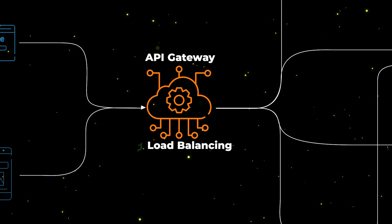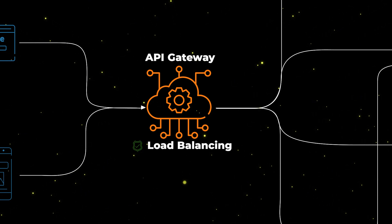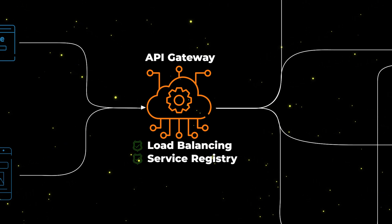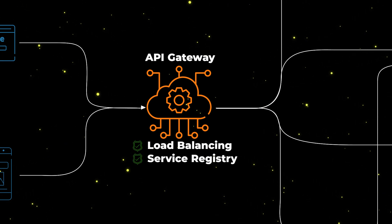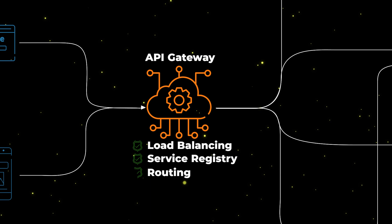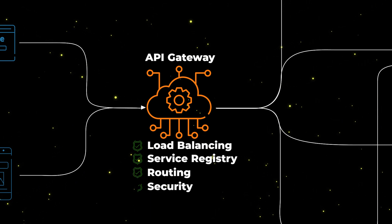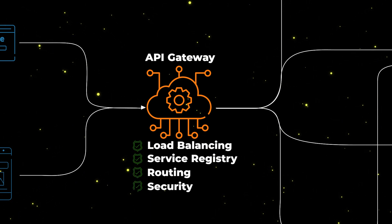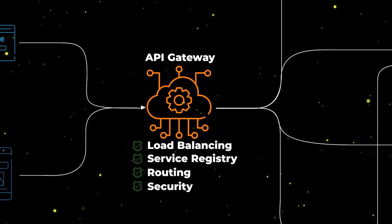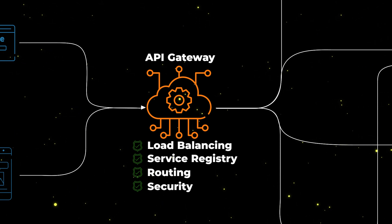The gateway does load balancing on the incoming traffic, it acts like a service registry — meaning that it's aware of all the services defined in the system — and knows how to route the request to the right microservice. It provides security-related features like rate limiting or even authentication, depending on the gateway type and provider, and of course many other features.